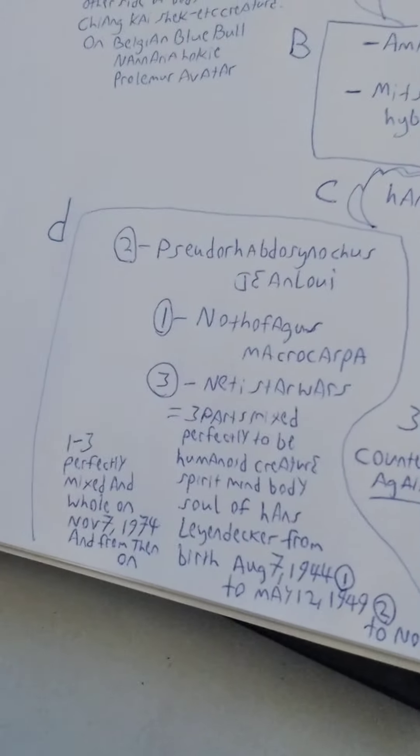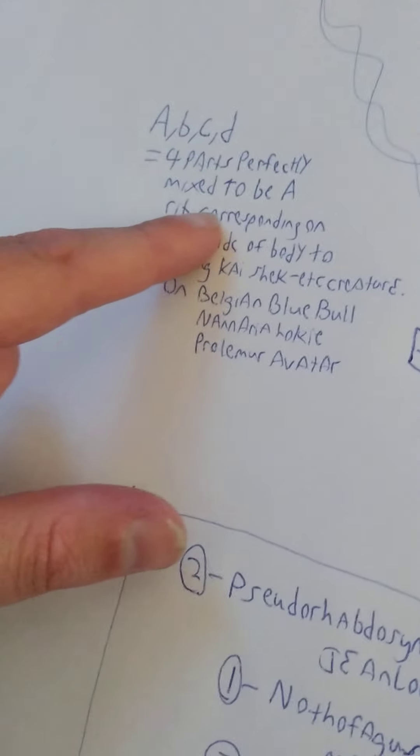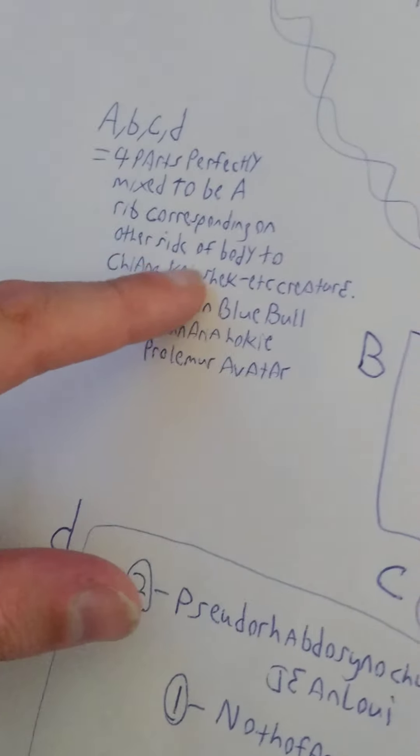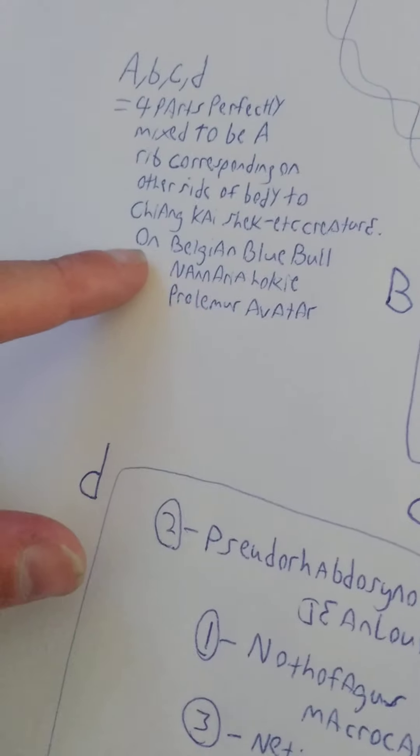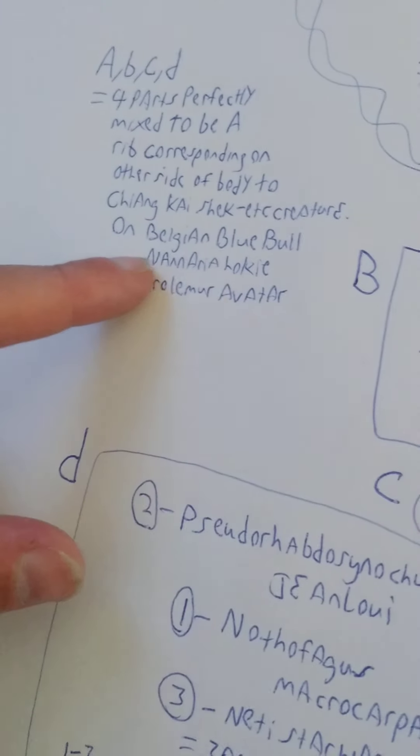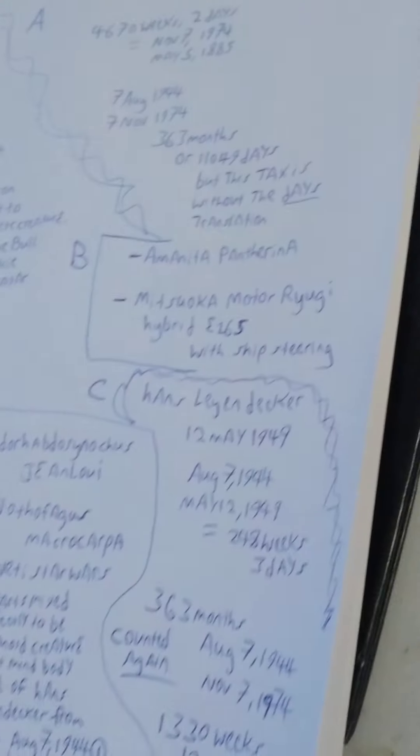Take all this to Lord Jesus. This is D. A, B, C, D equal four parts perfectly mixed to be a rib corresponding on other side of body to Chiang Kai-shek etc. creature on or in the Belgian Blue Bull and an area hokey Polymer Avatar.